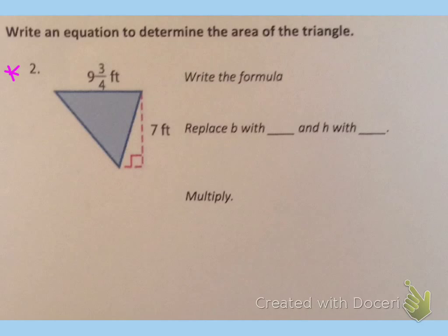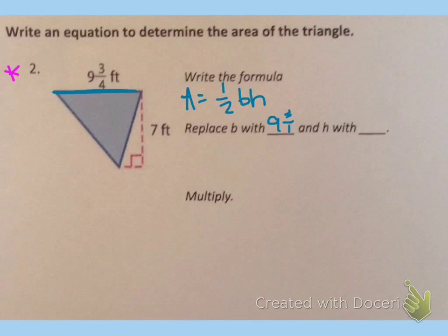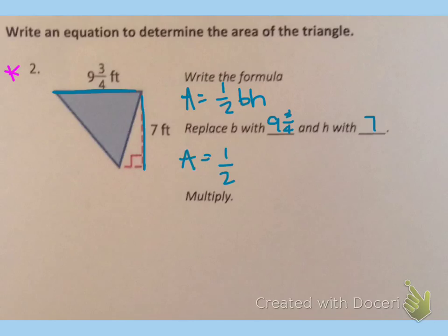Write an equation to determine the area of the triangle. The first thing we need to do is write the formula: A equals one-half times B times H, so area equals one-half of the base times the height. As I look at my triangle, I can replace B with the base. This side right here is the base, so I can replace B with nine and three-fourths, and the H, the height, is seven feet. So I'm going to replace the H with seven. When we rewrite the formula, we have A equals one-half times nine and three-fourths times seven.